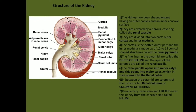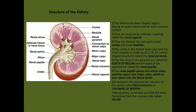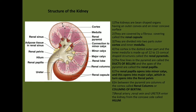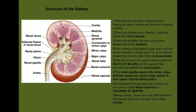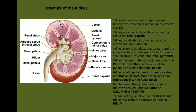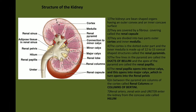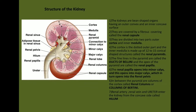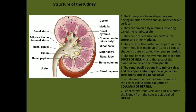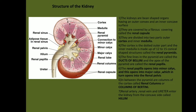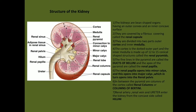The fine lines of the renal pyramids are known as ducts of Bellini. The apex of the pyramids are called the renal papillae. The renal papillae open into the minor calyx, which opens into the major calyx, which in turn opens into the renal pelvis. In between the pyramids are columns of cortex called the renal columns or columns of Bertini. The renal artery enters and the renal vein and ureter leave the kidney on the concave side, which is called the hilum.